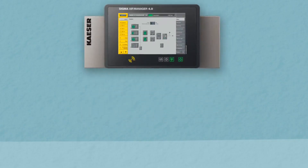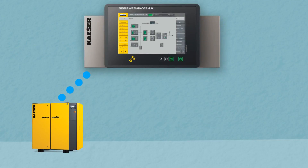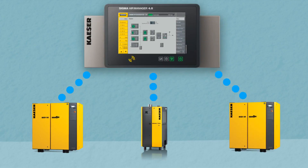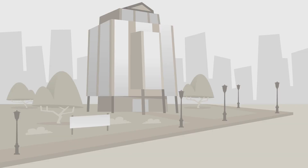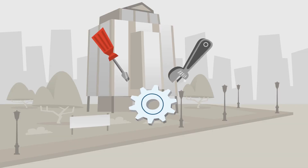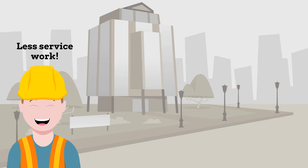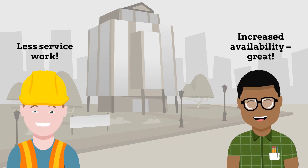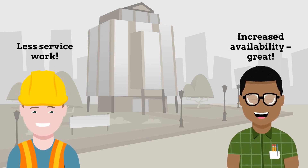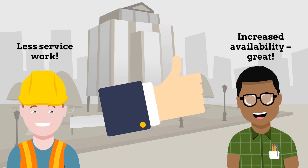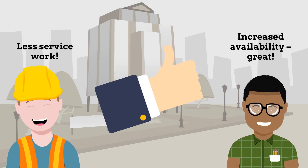The Sigma Air Manager 4.0 is a compressed air management system that is designed to monitor and control a compressed air system as a whole. It optimises the efficiency of the entire system and ensures that the operator is provided with a dependable supply of quality compressed air at all times.